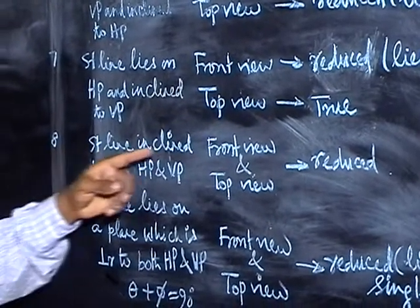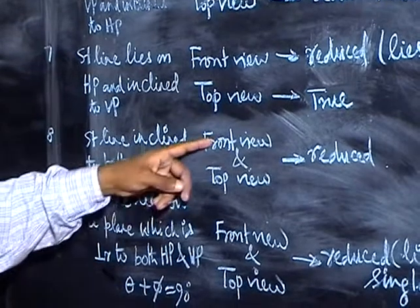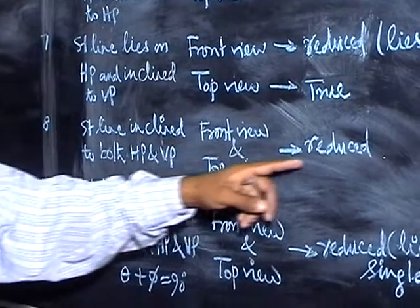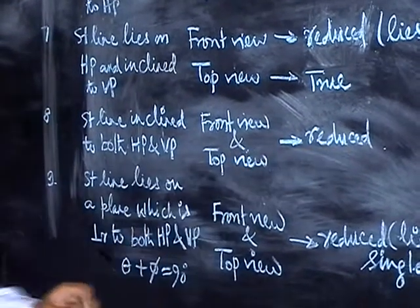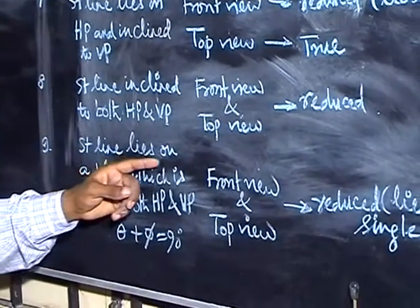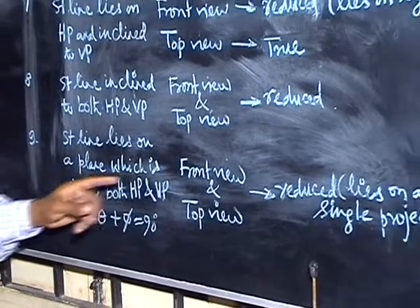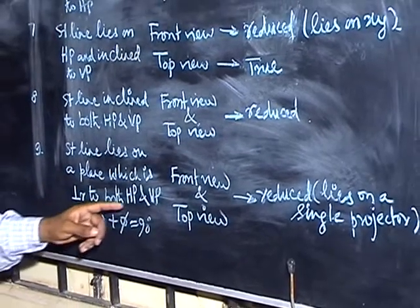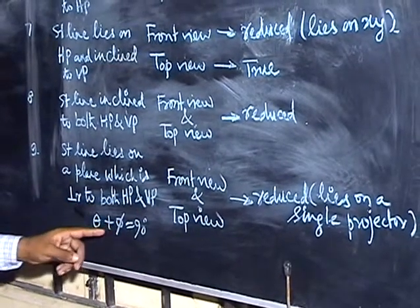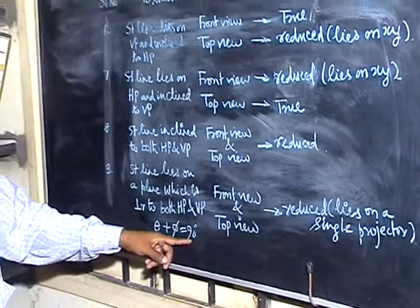When the straight line is inclined to both HP and VP, the front view and top view will both be of reduced length. In another case, when the line lies on a plane perpendicular to both HP and VP, the condition is that theta plus phi equals 90 degrees.